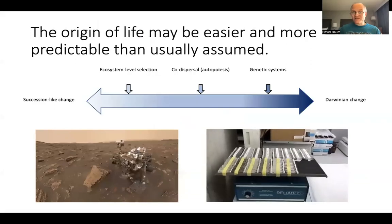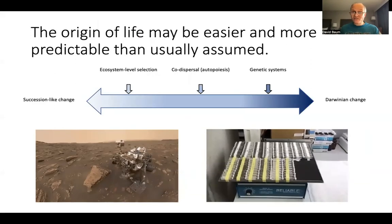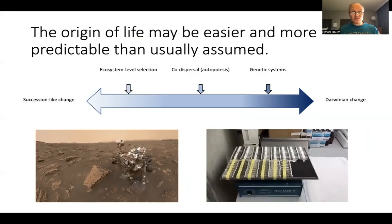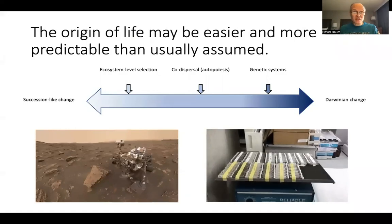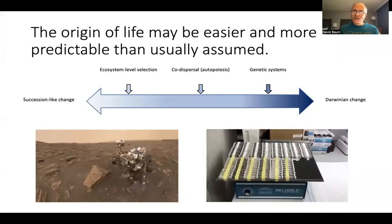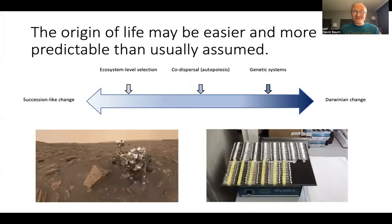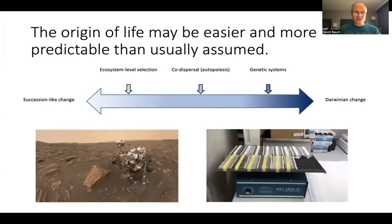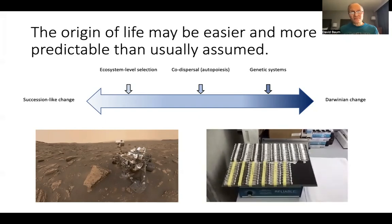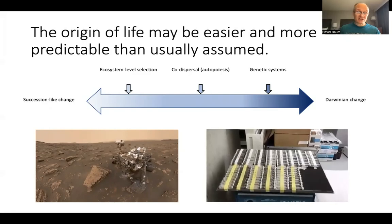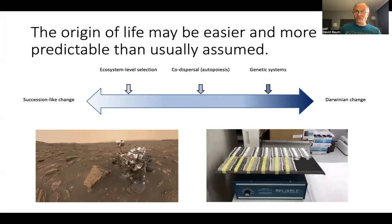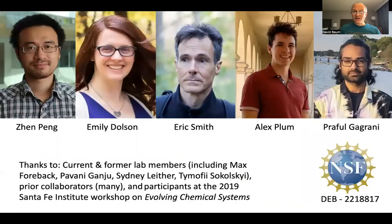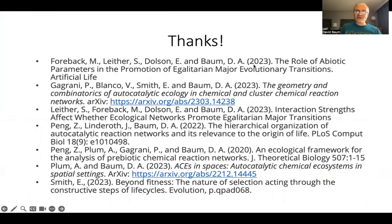Given all this, we see that there was a gradual transition from succession-like change to Darwinian change, through the acquisition of both autopoiesis, co-dispersal, and genetic systems. This suggests that the origin of life might be more predictable and easier than we usually think, which can guide astrobiological research and laboratory research — such as work in my lab, where we're looking for prebiotic chemical dynamics to see evidence of these ecological and evolution-like dynamics. With that, I want to thank my collaborators, co-authors, and funders. Thank you for your attention.